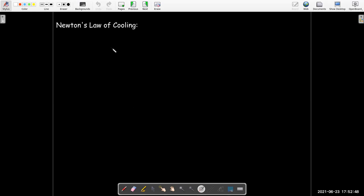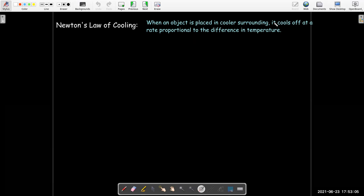Now Newton's law of cooling says that if you take an object and you place it in cooler surroundings, meaning that you could take something maybe out of the oven and put it in a cooling rack, or you could take something at room temperature and put it inside a refrigerator, well, it cools off at a rate which is proportional to the difference in temperature.